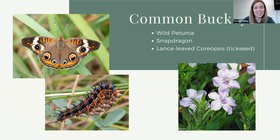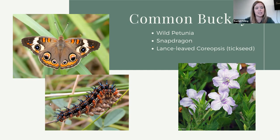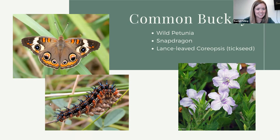Let's go for a more showy butterfly now. This is the common buckeye — slightly smaller, a couple inches across. The common buckeye is really beautiful with those eye spots on its wings — a defense mechanism that helps it look like a bird or snake to animals that might try to eat it. It has a ferocious-looking caterpillar with big old spikes all over it, small but definitely looks pretty intimidating. The common buckeye has a few different host plants: wild petunias — though most petunia you'll see at a garden center is not the wild variety and won't help as a host plant — snapdragons, and lance-leaved coreopsis, also known as tickseed, which has pretty yellow flowers.